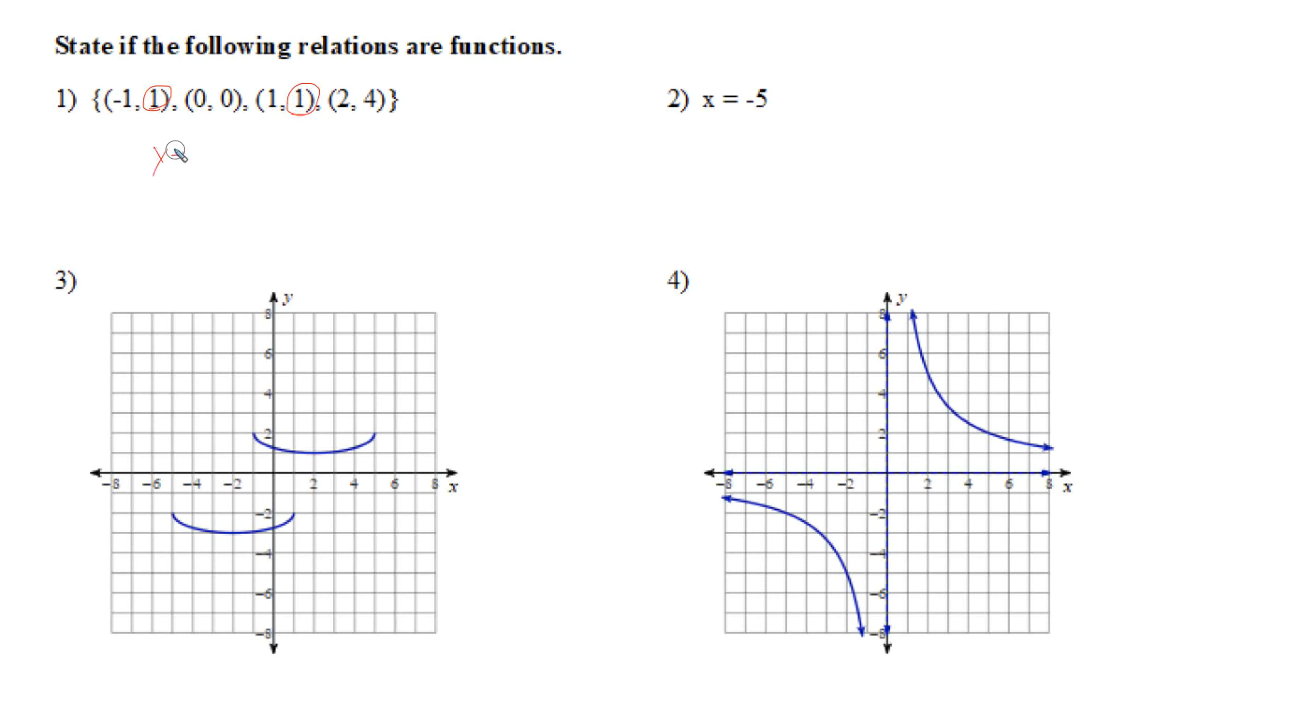Next one, x equals negative five. We have to have an understanding of what that means. X equals negative five is a line, it's actually a vertical line through negative five. A vertical line through negative five would look like this, and a vertical line does not pass the vertical line test. It goes through lots of points there, so this one is not a function.